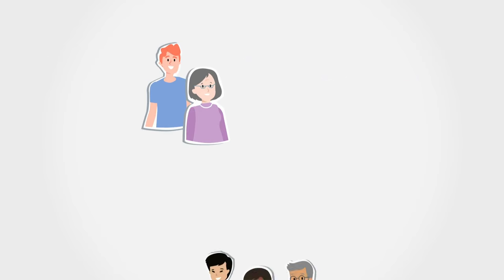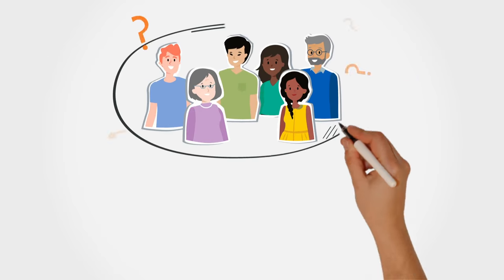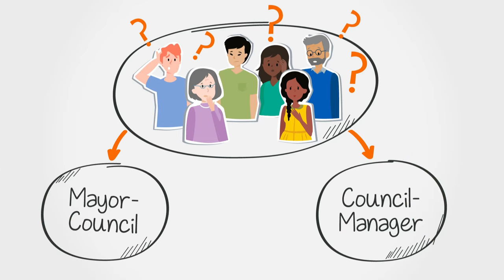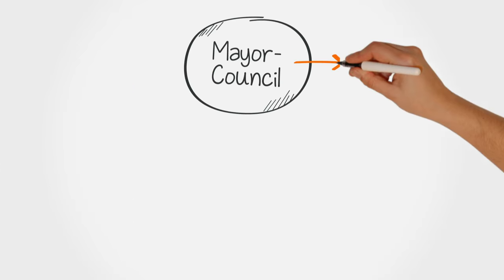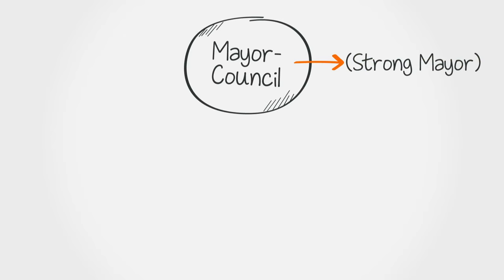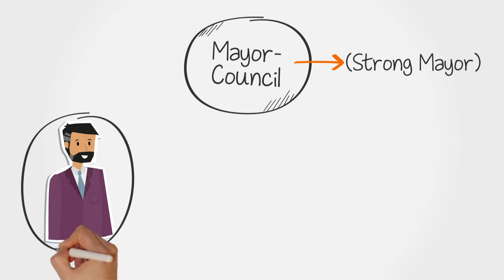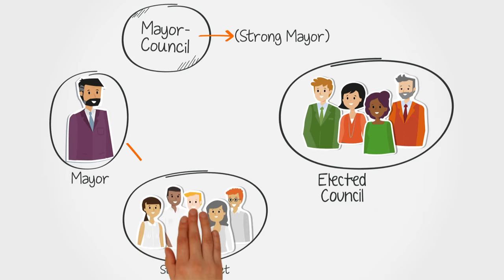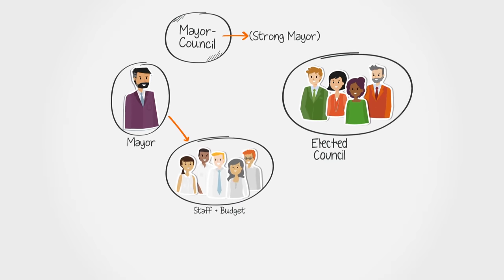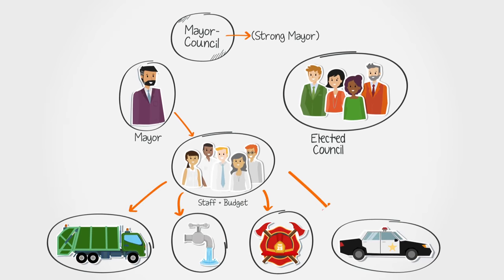Which form of local government provides the best structure for community success? You are probably familiar with the mayor-council or strong mayor form. Here the people elect one politician, the mayor, to lead the community, hire staff and oversee all day-to-day operations and service delivery.